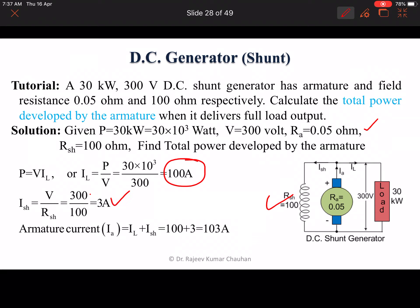Now, the total armature current equals IA plus Ish. We know from this node, IA equals IL plus Ish because IA is the entering current at this node and IL and Ish are the outgoing currents. Therefore, the armature current is 103 ampere.